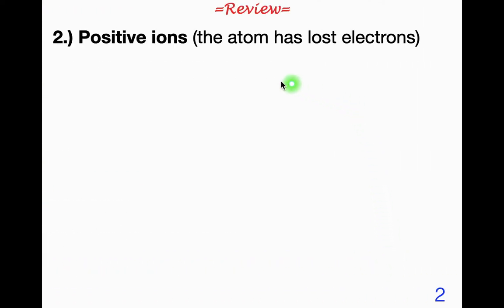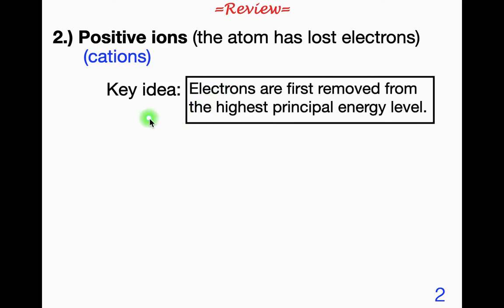Positive ions are atoms that have lost electrons. Of course they're called cations. The key idea here: electrons are first removed from the highest principal energy level.